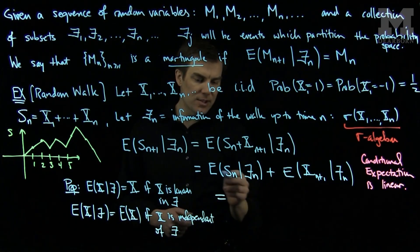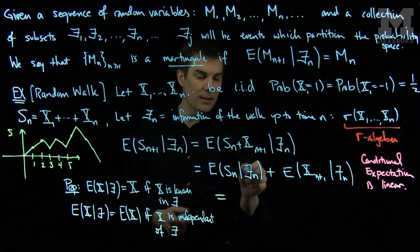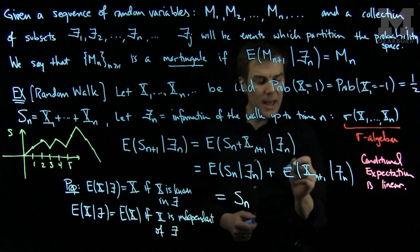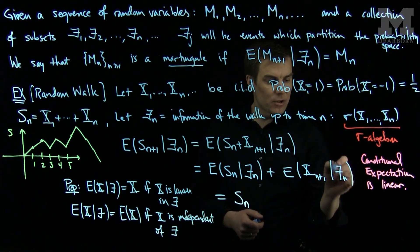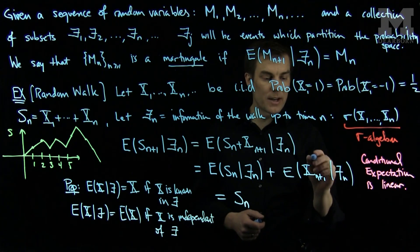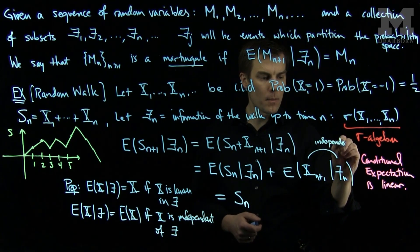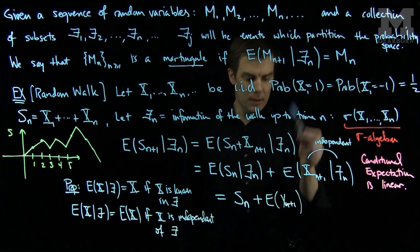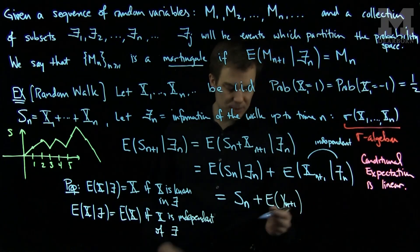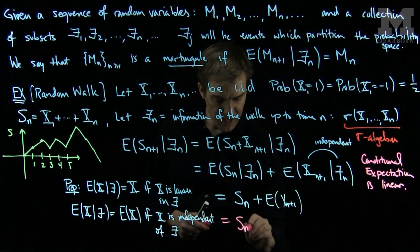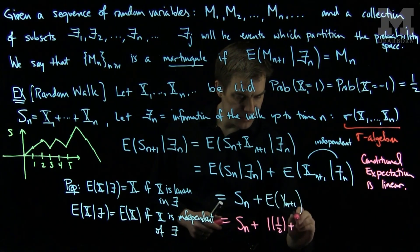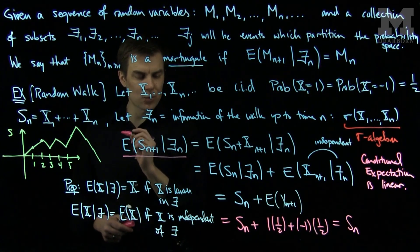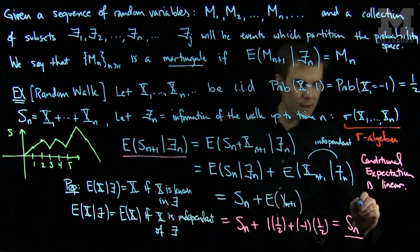Applying these properties: E[Sn | Fn] = Sn, because Fn knows all the information of the walk up to time n. And x_{n+1} is independent of Fn (Fn has walk info up to time n, while x_{n+1} is the next step), so E[x_{n+1} | Fn] = E[x_{n+1}] = (1)(1/2) + (-1)(1/2) = 0. Therefore E[S_{n+1} | Fn] = Sn, which implies that the random walk is a martingale.